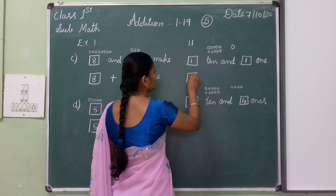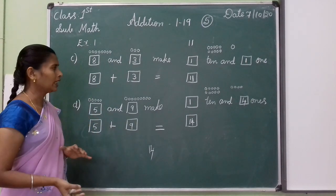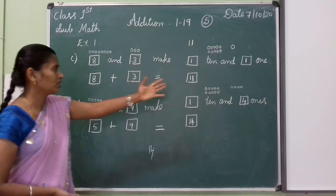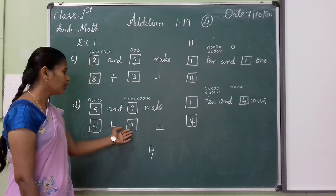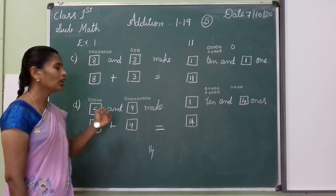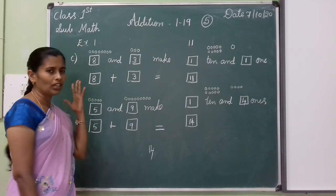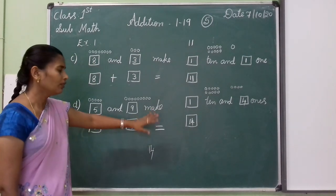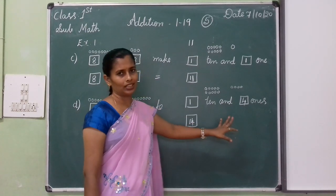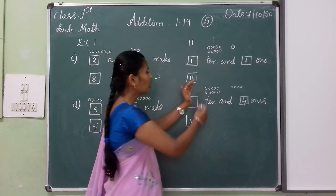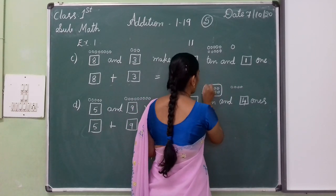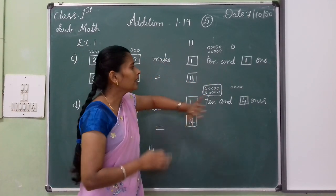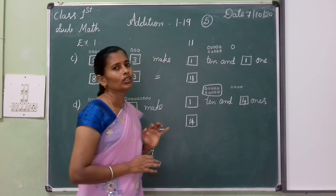When we add and get confused, we can add nine plus five with nine in the mind and five on the fingers. After nine: 10, 11, 12, 13, 14. Fourteen — one ten and four balls are there. Inside the bundle, ten circles are there, that is the one ten. Remaining four balls are the ones. One ten and four ones.